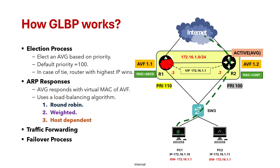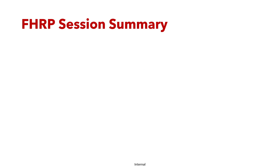That's it about GLBP as a CCNP core design topic. We will do a lab on FHRP in a later part of the series. So far, across the previous two or three videos, we discussed FHRP starting with an introduction, then HSRP and VRRP overview, and in this video, GLBP. We started with network resiliency, which is crucial for maintaining continuous and reliable connectivity in modern network designs.